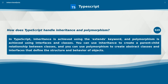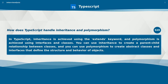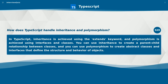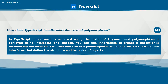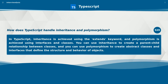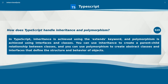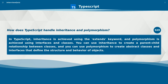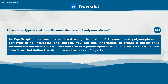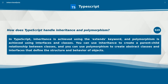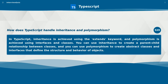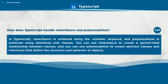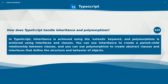How does TypeScript handle inheritance and polymorphism? In TypeScript, inheritance is achieved using the extends keyword, and polymorphism is achieved using interfaces and classes. You can use inheritance to create a parent-child relationship between classes, and polymorphism to create abstract classes and interfaces that define the structure and behavior of objects.